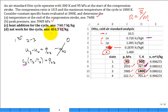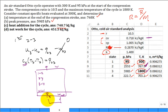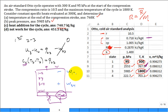Part D: what is the net work for the cycle? Populate the full table of Q's and W's for all four processes — half the table will be zeros. Sum the columns to get W_net and Q_net; they must be equal or you have an error. The net work is the sum of the positive expansion work from three to four plus the negative compression work from one to two.